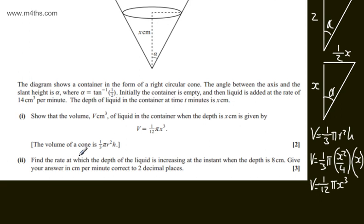So if we consider what we're looking for, we're looking at the rate of change of the depth. That is dx dt. So using connected rates of change, we can say that this will be equal to dx dv multiplied by dv dt.